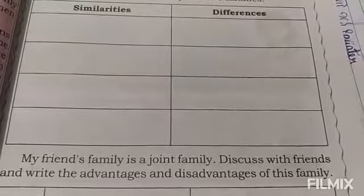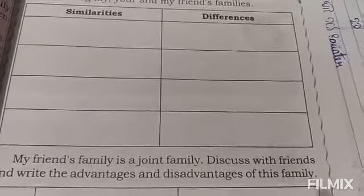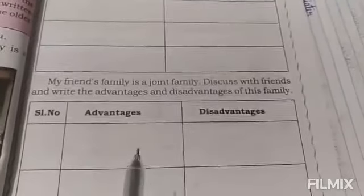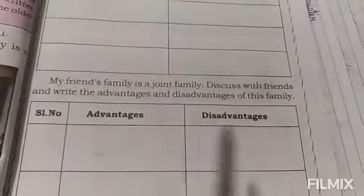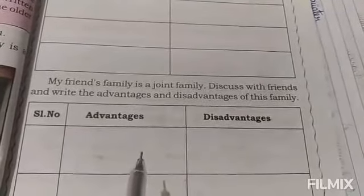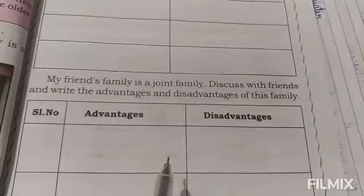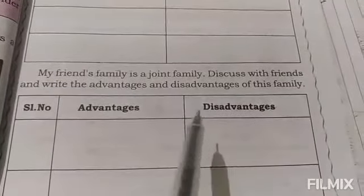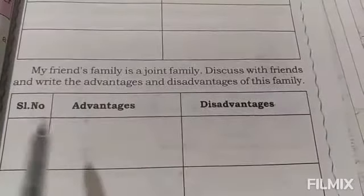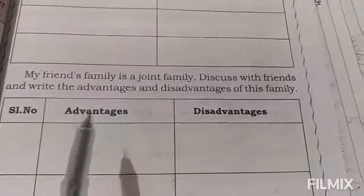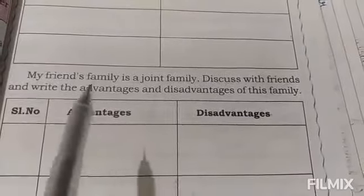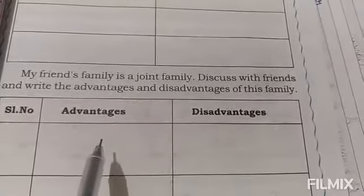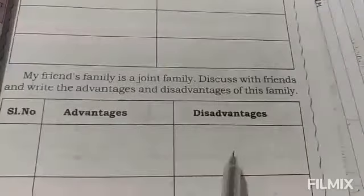My friend's family is a joint family. Discuss with friends and write the advantages and disadvantages of the family. Here you have to write the advantages and disadvantages. What are the advantages and disadvantages of the joint family? So you have to write in your homework book. In the previous classes you learnt about the joint family. So now you have to tell what are the advantages and disadvantages — first write the advantages and then the disadvantages.